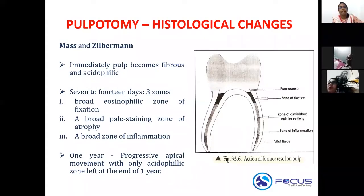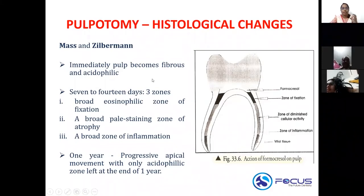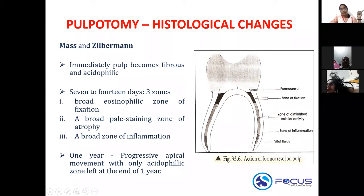In pulpotomy, once you place a pulpotomy agent onto your radicular pulp, the pulp will immediately become fibrous and acidophilic. With formocresol, because of its acidic content, the pulp becomes acidophilic. In contrast, with pulp capping using calcium hydroxide, it was becoming basophilic because of the calcium hydroxide.